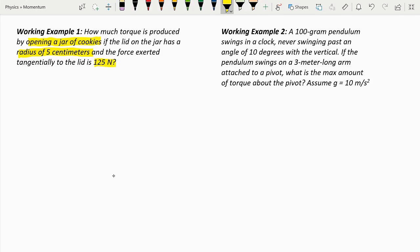So before we do anything, let's first write down what we know. The force is 125 newtons, the radius is 0.05 meters, the angle is 90 degrees since it's tangential, and we are trying to figure out the torque.